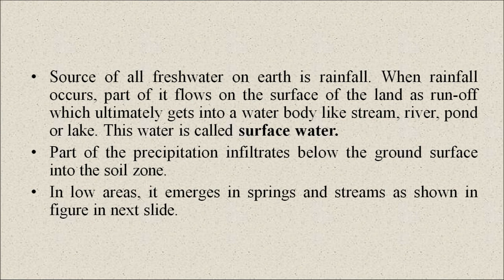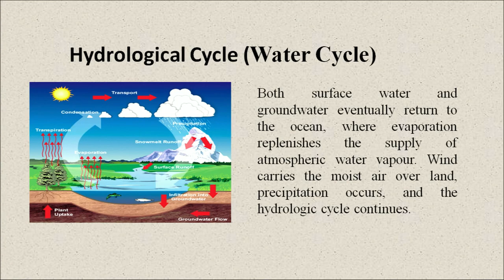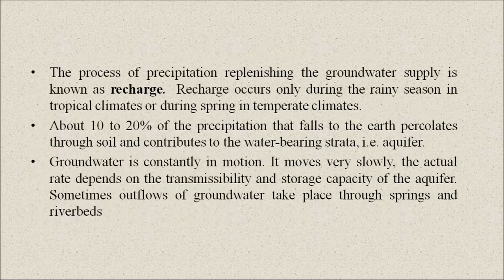Part of the precipitation infiltrates below the ground surface into the soil zone. In low areas, it emerges in springs and streams, as shown in the hydrological cycle diagram. Both surface water and groundwater eventually return to the ocean, where evaporation replenishes the supply of atmospheric water vapor. Wind carries the moist air over land, precipitation occurs, and the hydrologic cycle continues.